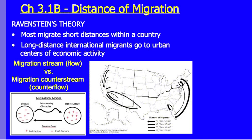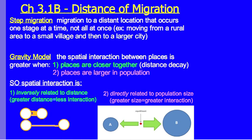Step migration is when migration to a long-distance place happens a little at a time, not all at once. It occurs one step or stage at a time. For example, someone from a rural area might first move to a small village, then to a larger city, and then to an even larger city.